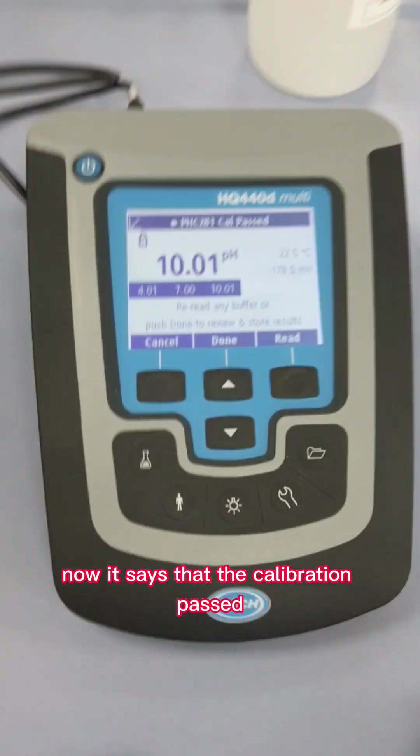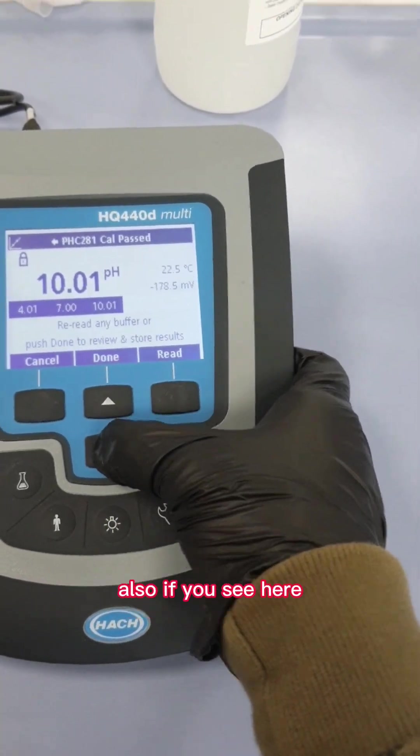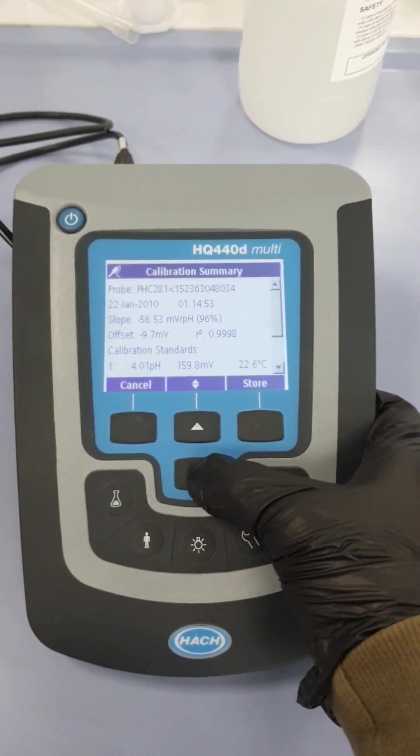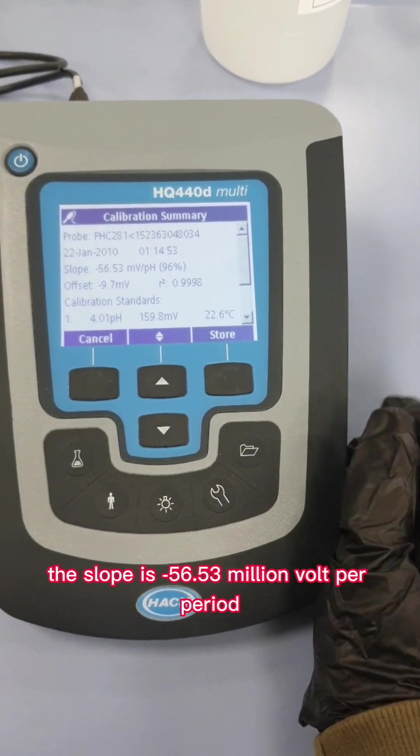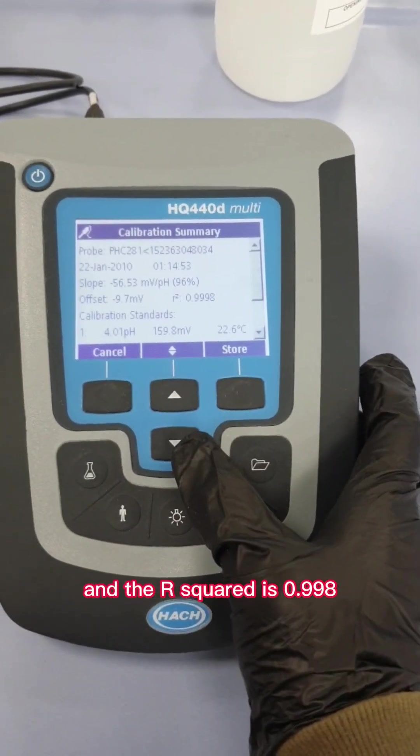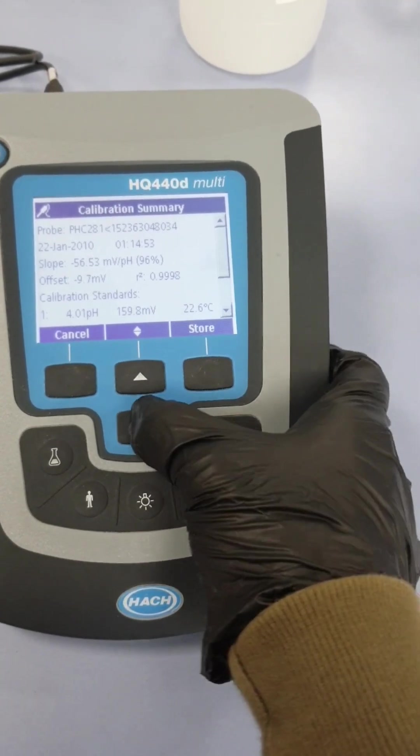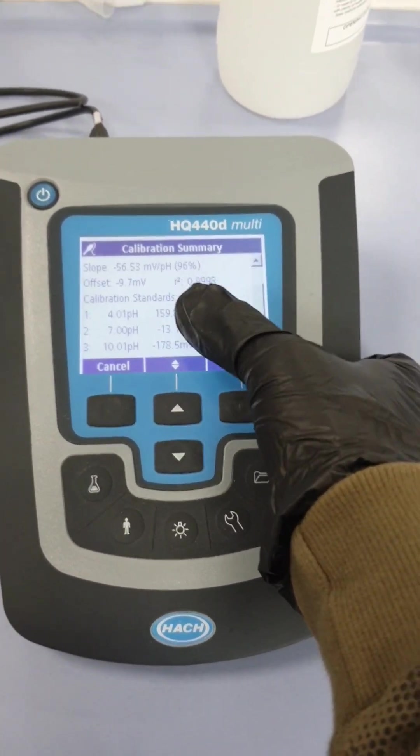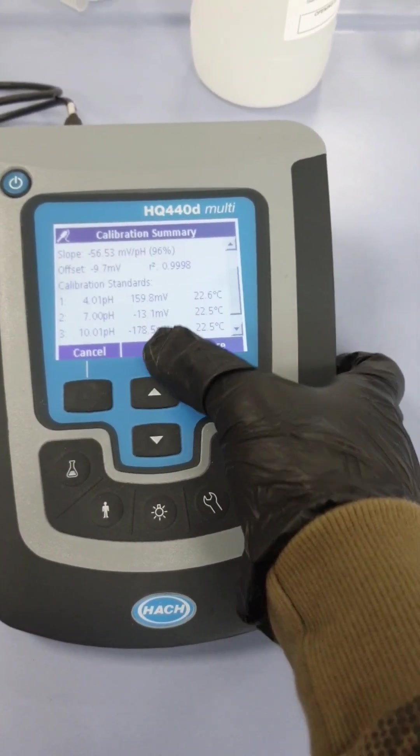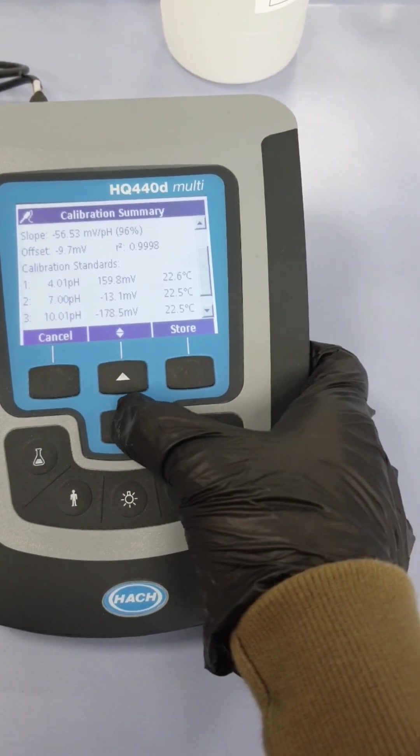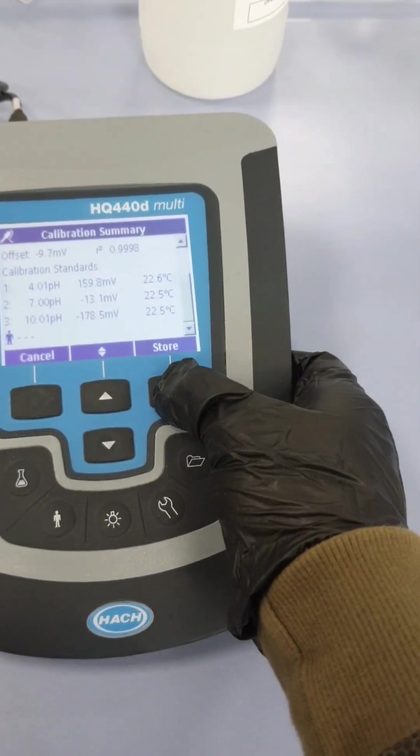Now it says that the calibration passed. It says re-read any buffer or push done to review and store results. If you see here, this slope is minus 56.53 millivolts per pH, which is 96 percent, and the R-squared is 0.998. The offset value is minus 9.7 millivolts. You can see at pH 4, the potential difference is 159.8 millivolts. At pH 7 it's minus, and for pH 10 it's minus. This is the temperature correction reading. Now we will store.